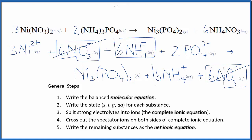Here in the reactants, six ammonium ions. And again, in the products, six ammonium ions. Spectator ions get crossed out.